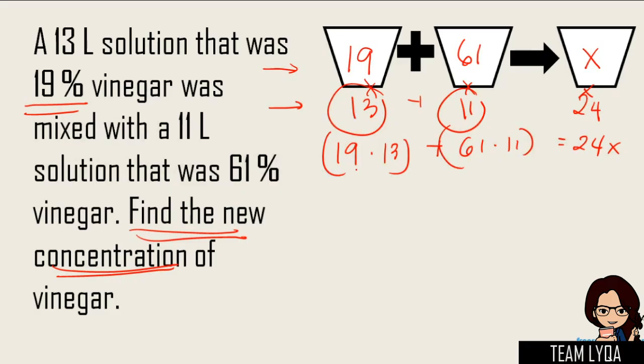And then, you can solve it. Now, in my case, what I do na lang doon sa 19 times 13 is, I multiply it by 20 muna. So, you have 260 minus isang 13. That would be 247 plus 61 times 11. So, 610 yung sampo plus isa pang 61. So, that is 671 is equal to 24x. And then, you will just add them both. So, 247 plus 671.